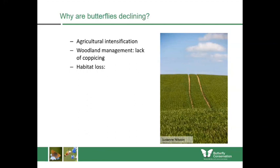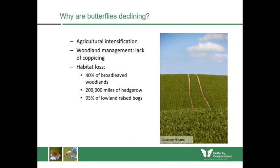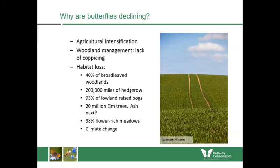Other types of habitat loss include almost half of our broadleaf woodlands gone, 200,000 miles of hedgerow lost, 95% of our lowland raised bogs lost, many of our elm and ash trees lost, and 98% of our flower-rich meadows lost. We're also now looking at the impacts of climate change and pesticides. This has been described as death by a thousand cuts because insects are really getting it from many angles.